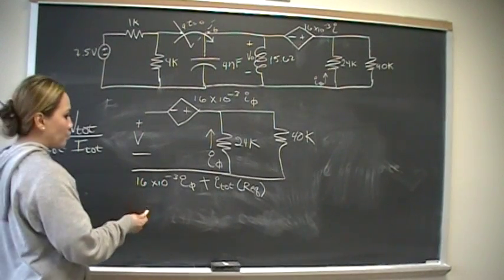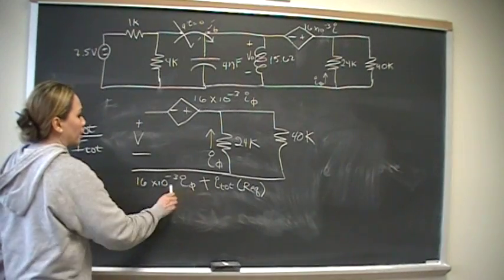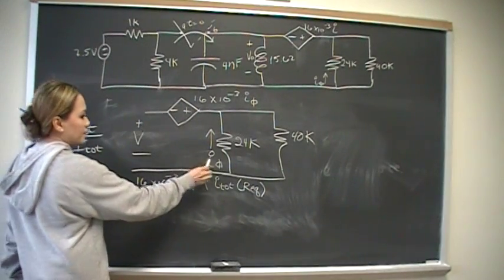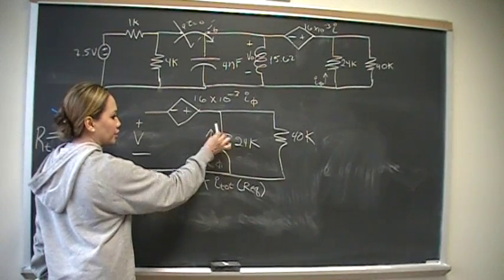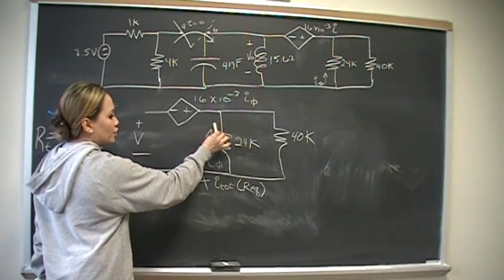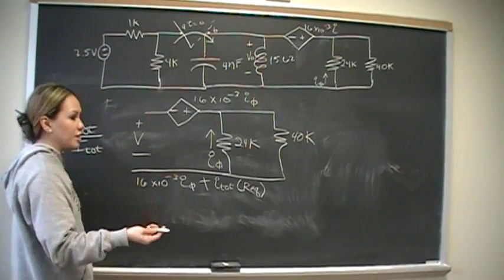So the problem we have now is that we have this I sub V, and we have two unknowns. Well, I sub V is the current that's going just through this capacitor, or, excuse me, this resistor. So to get it in terms of I sub total, we use current division.